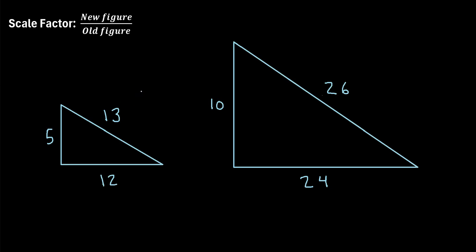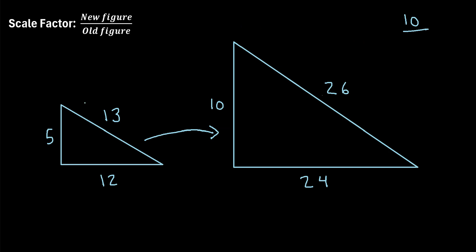Let's try another example. We have two similar triangles. Going from the smaller triangle to the larger triangle, what is the scale factor? We call the large triangle the new figure. We pick a side — this side has a length of 10. The scale factor is 10 divided by the corresponding side in the old figure, which is the small triangle. That side has a length of 5. So 10 divided by 5 equals 2. The scale factor is 2. Since we're going from a smaller figure to a larger figure, the scale factor should be greater than 1, and it is.